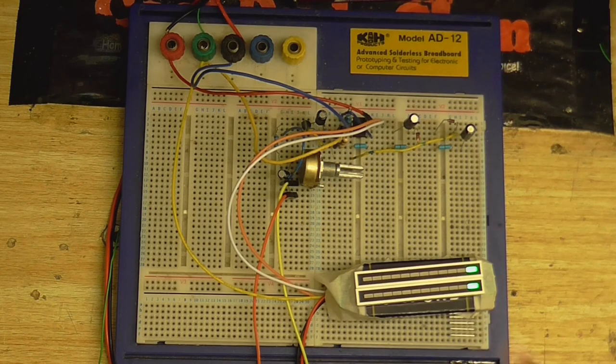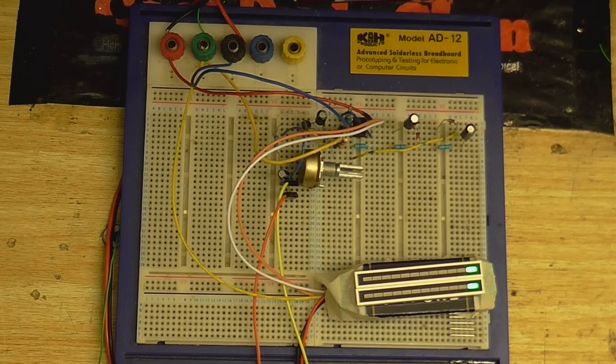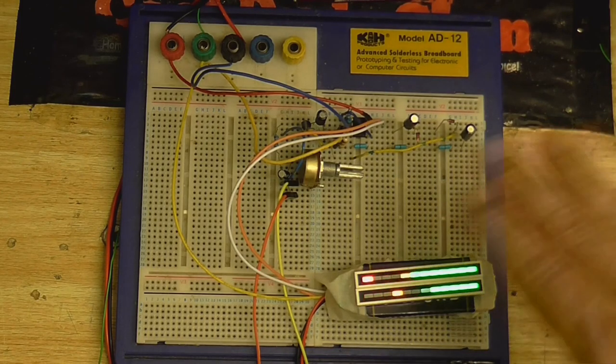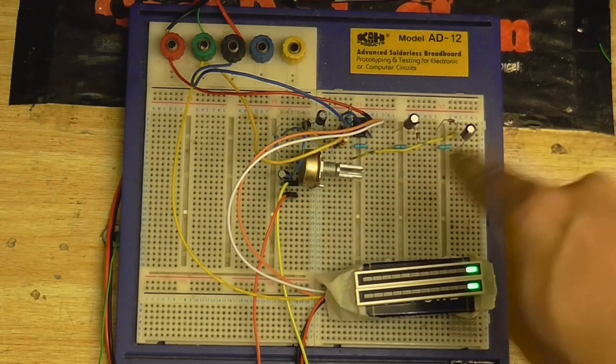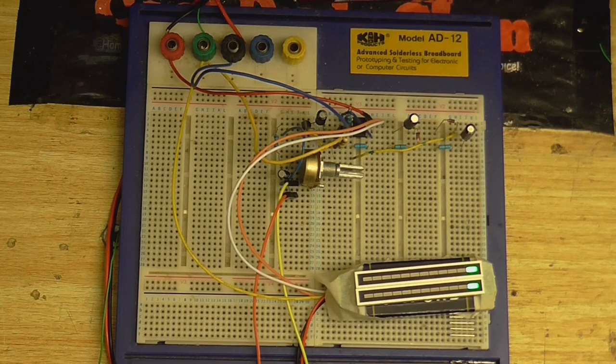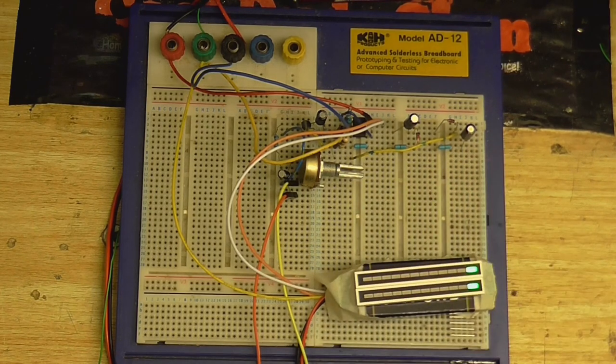So anyway, now with the meter connected to it... Let's just give it a little demonstration. Yeah, that's really peaking the thing. I'm going to have to turn that down a bit. Now, of course, just turning the level down the normal way... You can still see that's peaking the thing because it's keeping the level nice and steady.